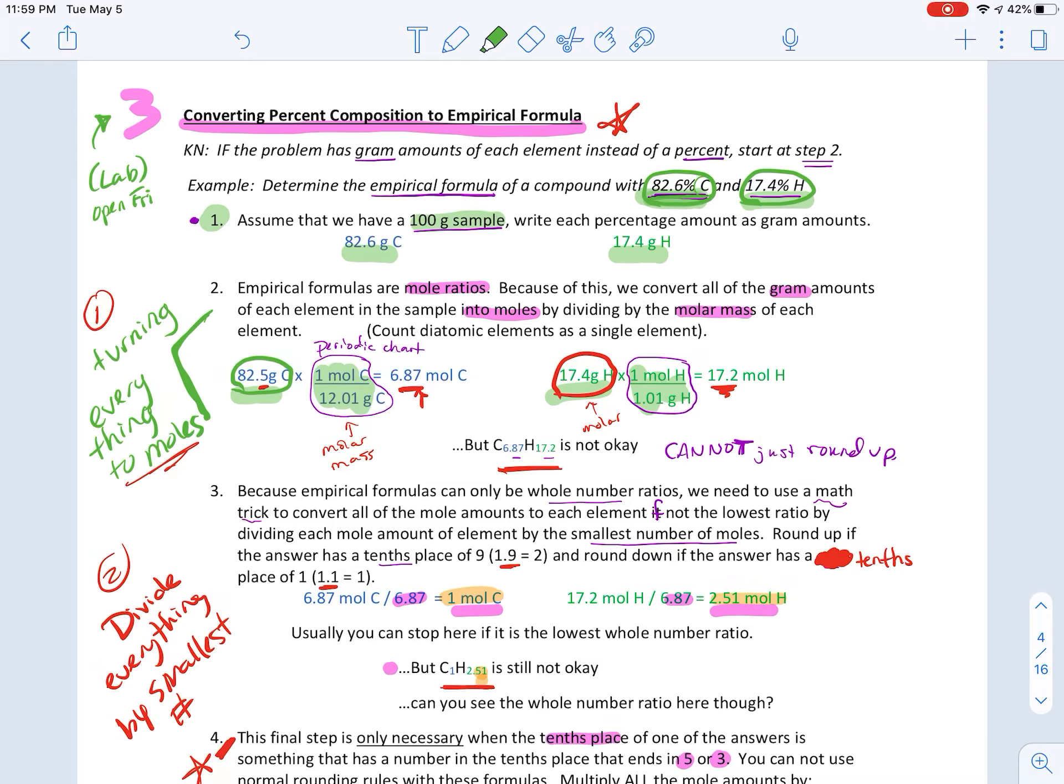So this is the molar mass off the periodic chart for carbon. And this is for hydrogen. And we're just taking our two masses that we got in part one, and we're turning them into moles. Now, if those moles had come out to be pretty and perfect numbers, and they didn't have decimals, then we could have just gone ahead and done what right down here. We could have just turned it into a formula and be done with it. However, it's not okay.